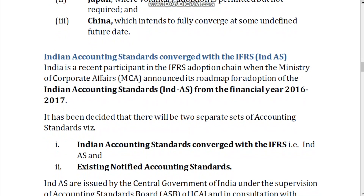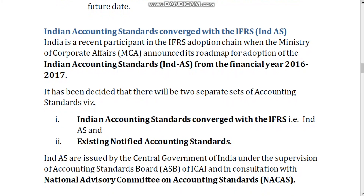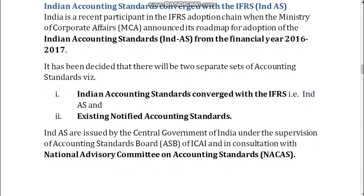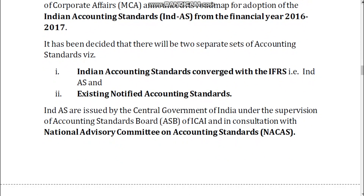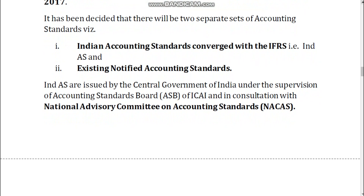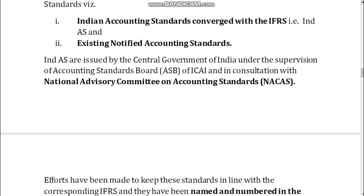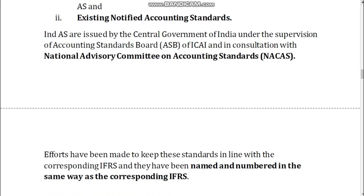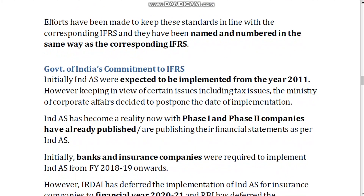Indian accounting standards converged with IFRS. India is a recent participant in the IFRS adoption chain. The Ministry of Corporate Affairs announced its roadmap for adoption of Indian accounting standards from the financial year 2016 to 2017. It was decided that there would be two separate sets of accounting standards: Indian accounting standards converged with IFRS, i.e., Ind AS, and existing notified accounting standards. Ind AS are issued by the Central Government of India under the supervision of the Accounting Standards Board of ICAI, in consultation with the National Advisory Committee on Accounting Standards. Efforts have been made to keep these standards in line with the corresponding IFRS, and they have been named and numbered in the same way as the corresponding IFRS.